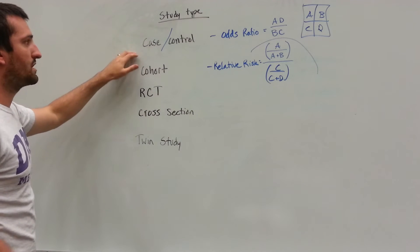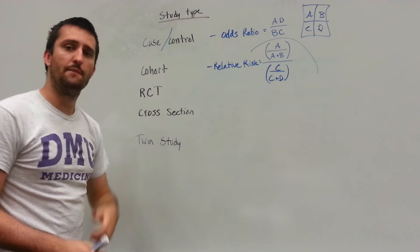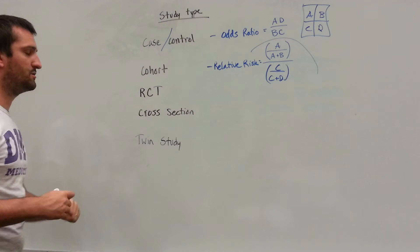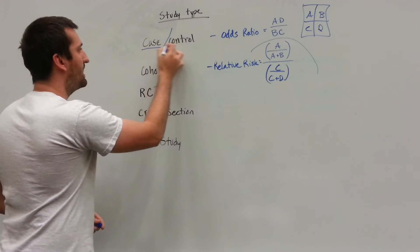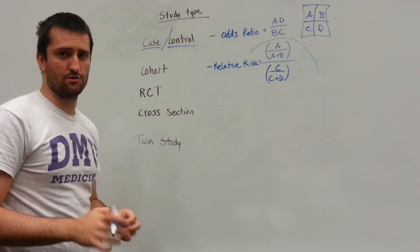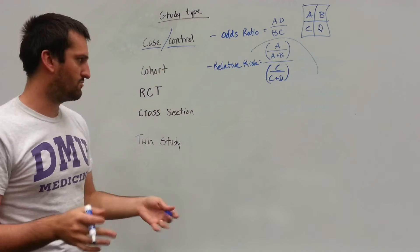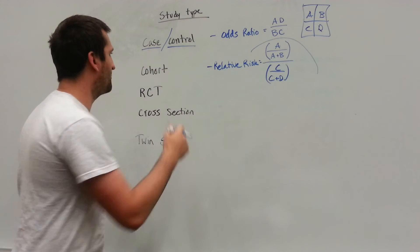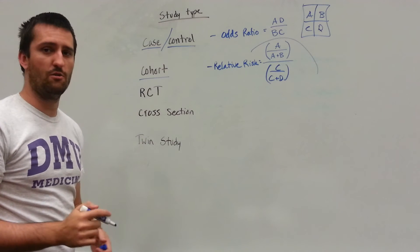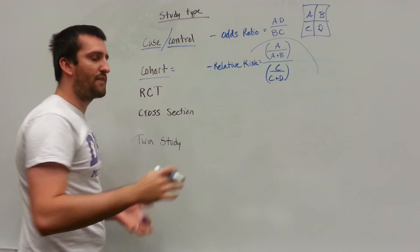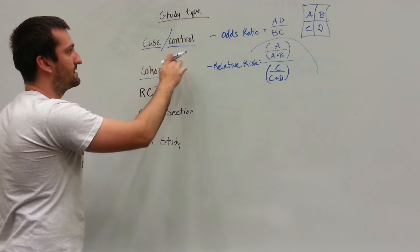So case control study, we're going to be taking a case of people and following them through time. And a control study, following them through time and comparing the two. For a cohort study, what we're going to be doing is we're going to be looking at it from a different view. Well, here we had a case and a control. For a cohort, we're going to be using an exposure. So radiation, we have a hundred people that walked into Chernobyl and got exposed to radiation. We're also going to compare a hundred people that did not go to Chernobyl and they're just normal people. So we're going to see what the outcomes are based on an exposure.